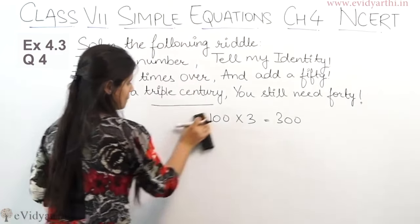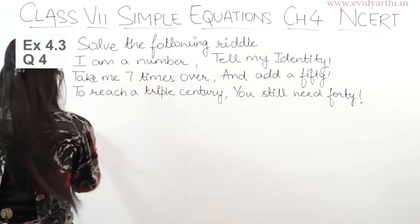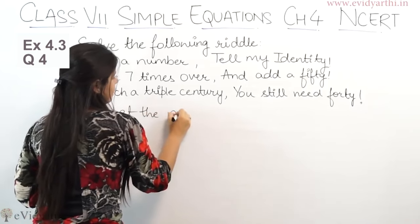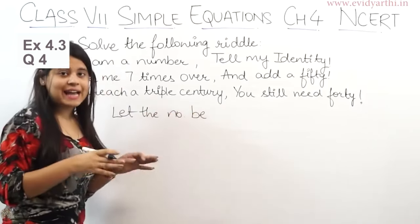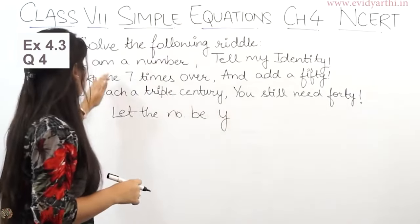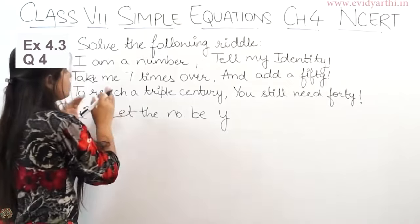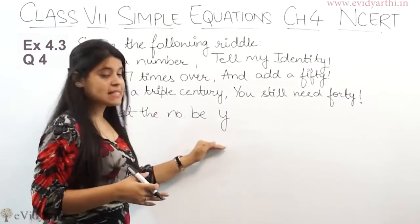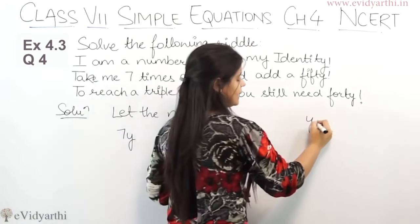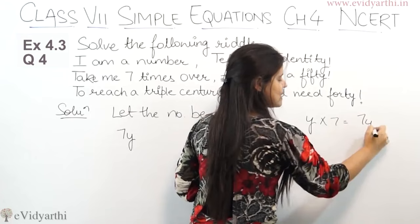Let's begin. So let the number be—now since this is the last question, so this time I am letting it Y. I am a number, tell my identity. Let me take me 7 times over. Now this time 7 times, that is 7Y. We obviously know if number is this, this time 7 times multiply it, and 7 into Y is 7Y.